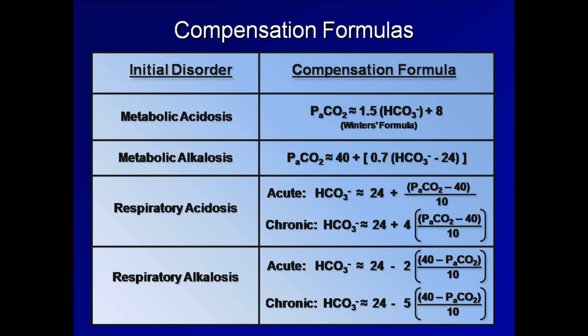How much variation is allowed by the approximately equal sign? It's common to cite Winter's formula as pCO2 = 1.5 × bicarb + 8 ± 2. However, owing to substantial variation in compensation between individuals, the confidence intervals should likely be much wider. One authoritative source cites ±5 mmHg for pCO2 when estimating respiratory compensation for metabolic disorders, and ±3 mEq/L of bicarb when estimating metabolic compensation for respiratory disorders. This wider range appropriately reflects the uncertainty in diagnosing complicated acid-base disturbances.